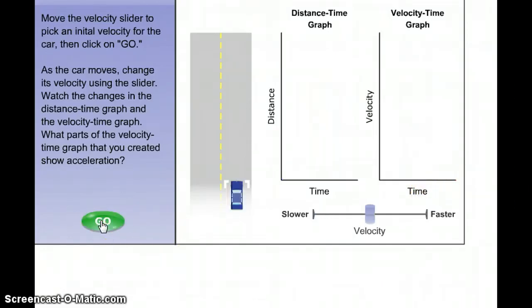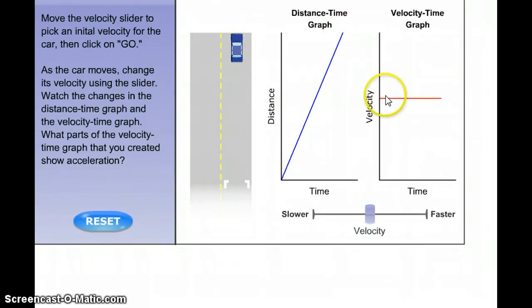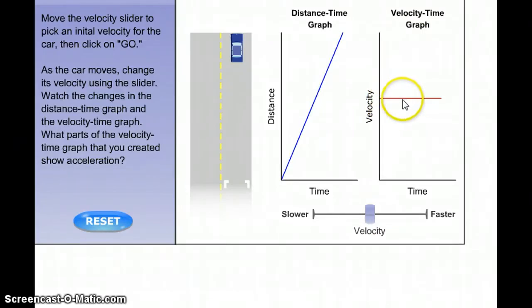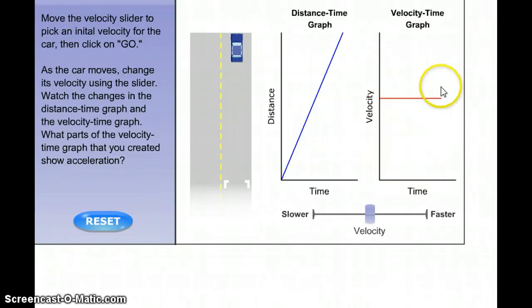Here's the last one. Watch what happens when the car goes at a constant speed. Constant speed on a distance-time graph is a straight slope, but on a velocity-time graph, this is showing the car was not speeding up or slowing down. It was going the same speed the entire time, meaning this car did not accelerate — it was going 30 miles an hour the whole time, and did not speed up or slow down.